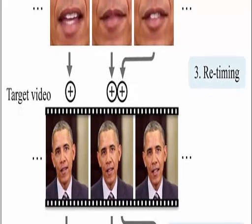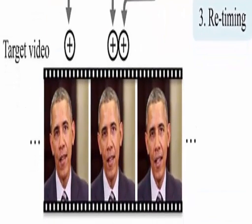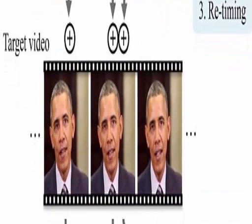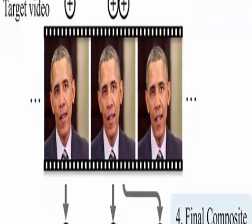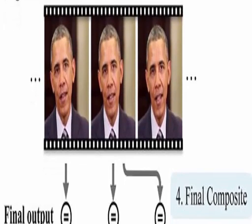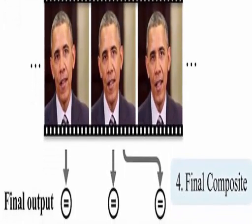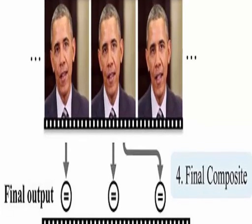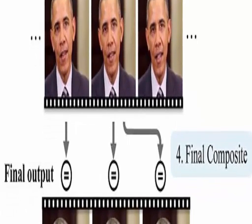The system works by converting audio files of an individual's speech into realistic mouth shapes, which are then grafted onto the head of that person from another existing video. The study, conducted by researchers at the University of Washington, explained how the team created realistic videos of Obama talking about different topics.